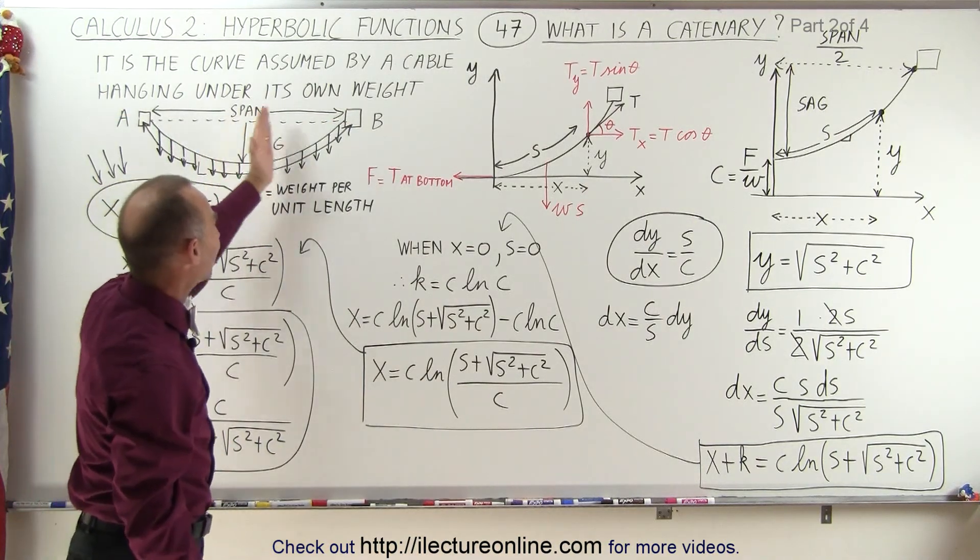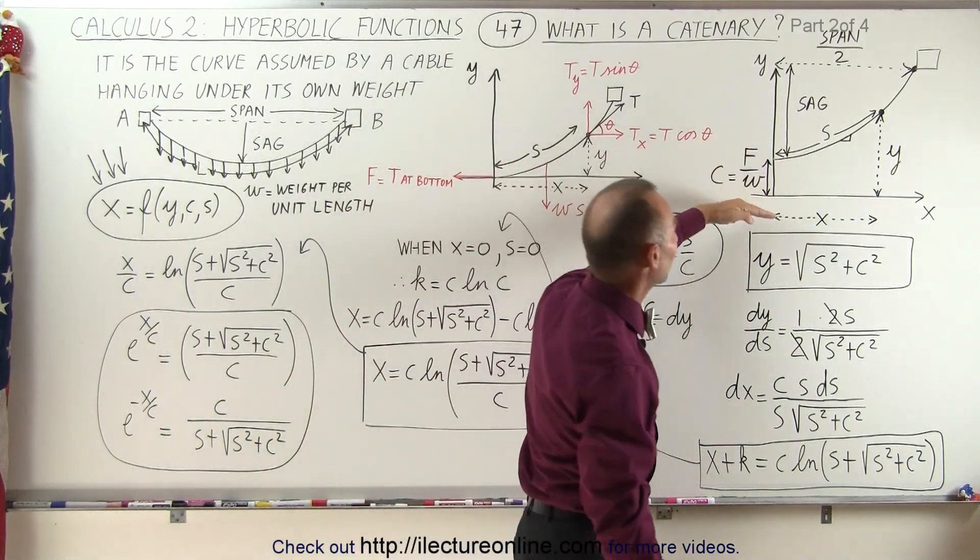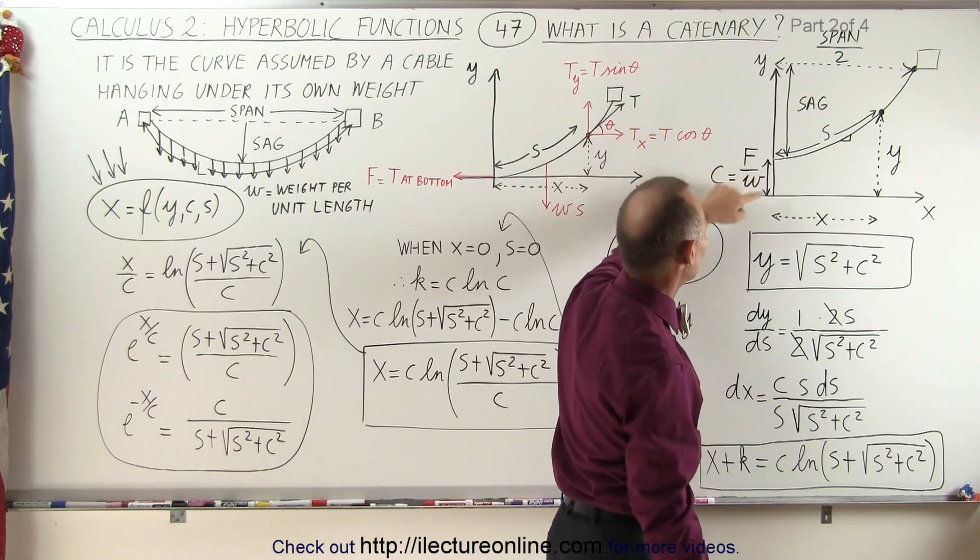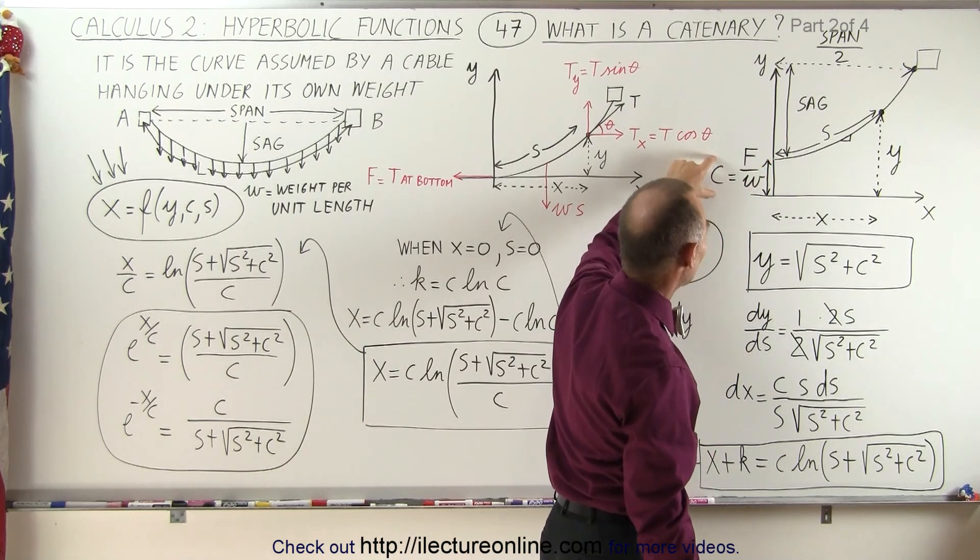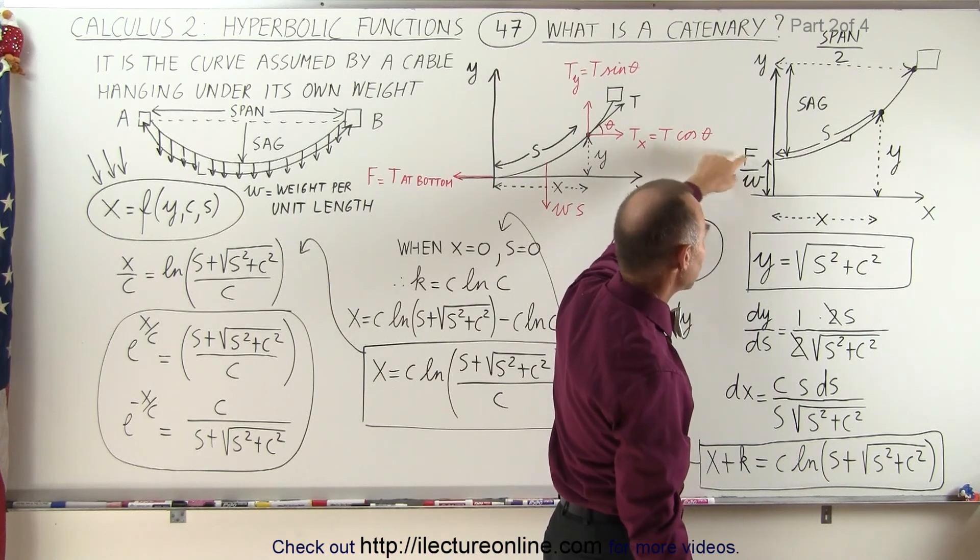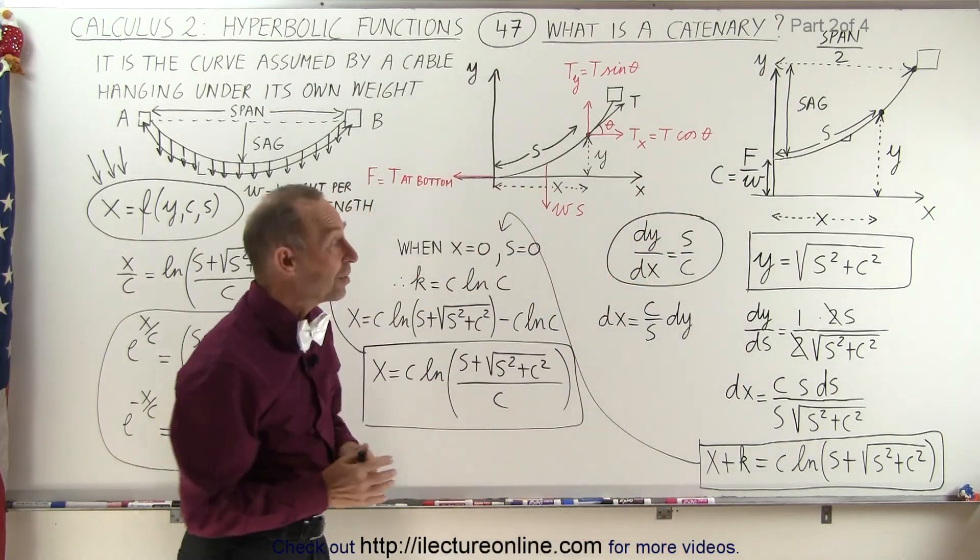We first take half of that cable and put it on the x-y axis, and then we resettle it on the x-y axis by lifting the graph upwards so that this distance to the bottom of the cable is called c, and c is defined by the ratio of the tension at the bottom of the cable, which we called f, divided by the weight per unit length.